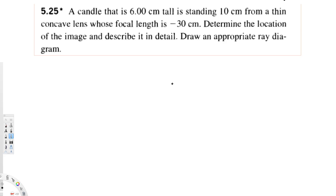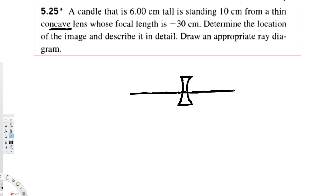First, let's go ahead and draw our ray diagram and then solve for the image distance. We are going to have a concave lens — this is our concave lens — and let's draw the normal axis. Let's say this is our object.